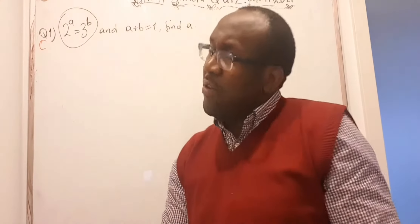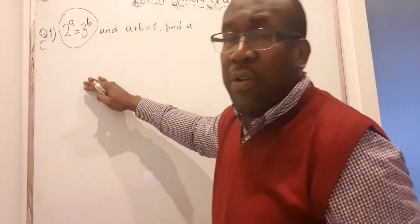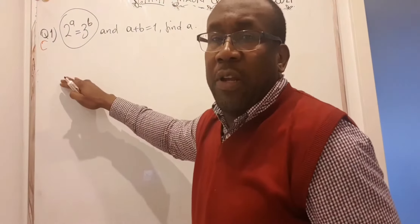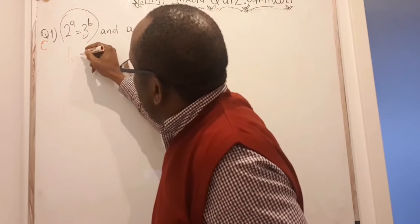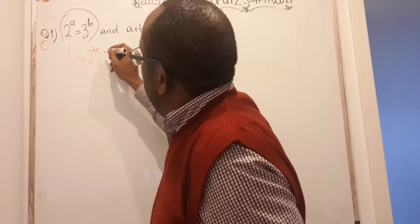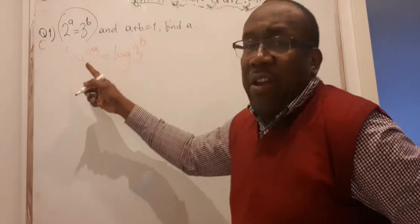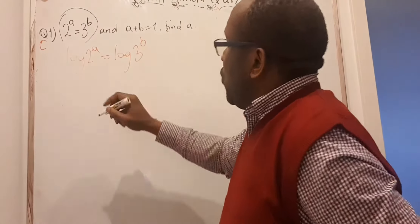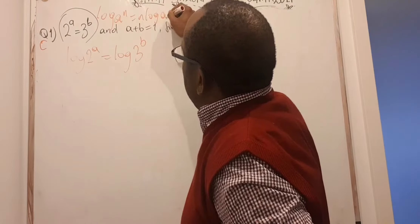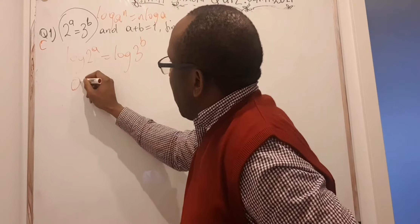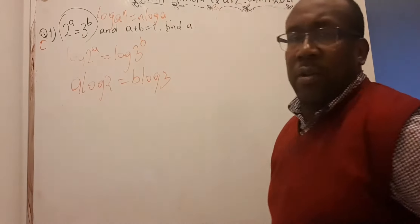We can move from exponential and transform to logs, as well as from logarithm to exponential. There are many videos within the Math Salon YouTube channel where I explain that. To do that here, I will take the log of both sides: log of 2^a is equal to log of 3^b. From earlier stages of logarithms, you learned that log(a^n) = n·log(a), so the power can come in front. This means I can write this as a·log 2 = b·log 3.